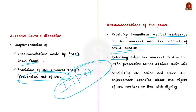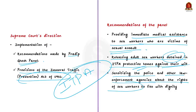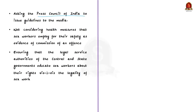The second recommendation is releasing adult sex workers detained in ITPA protective homes against their will. According to the act, a magistrate has the power to rescue a person living or carrying on prostitution in a brothel. Once the magistrate takes cognizance, an inquiry is directed to the probation officer. If the inquiry finds that the person needs care and protection, they can be sent for detention in a protective home for one to three years. The panel recommends releasing adult sex workers who are detained in these homes against their will.